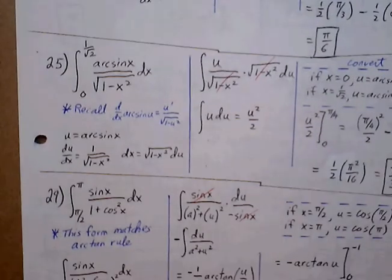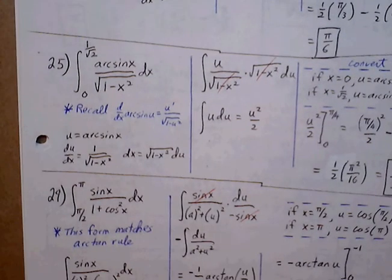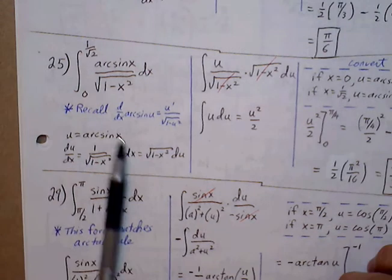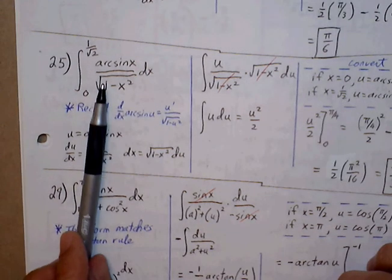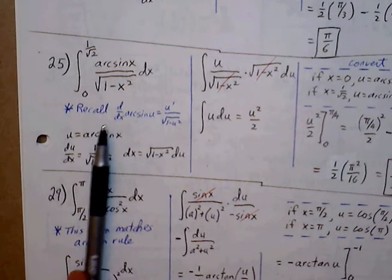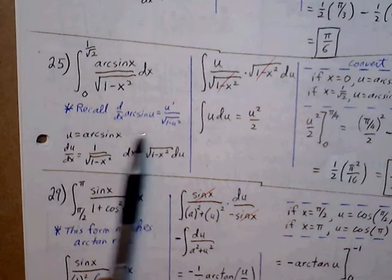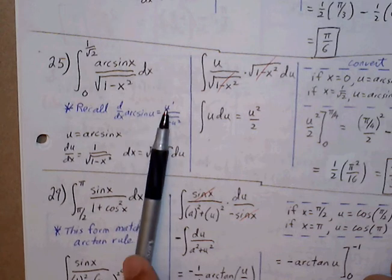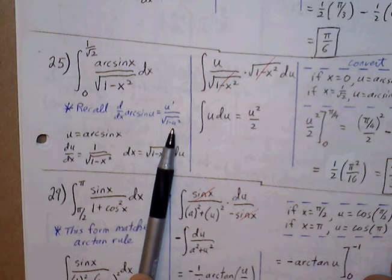Problem 25: we have the definite integral of arctangent(x) over √(1 − x²) from 0 to 1/√2. We see arctangent, so let's recall its derivative rule: the derivative of arcsin(u) is u′ over √(1 − u²).